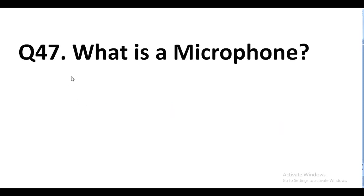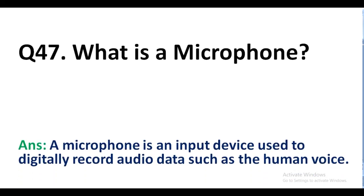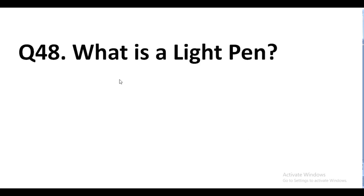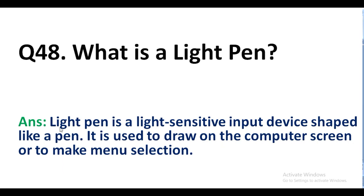Question number 47. What is a microphone? Answer. A microphone is an input device used to digitally record audio data such as the human voice. Question number 48. What is a light pen? Answer. A light pen is a light-sensitive input device shaped like a pen. It is used to draw on the computer screen or to make menu selections.